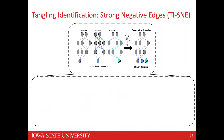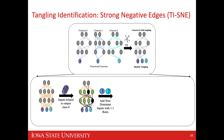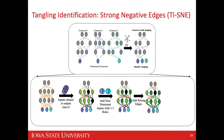Another approach is strong negative edges. Similar to the previous examples, the only difference is that we don't add all edges — we add only strong edges, meaning edges that contribute significantly towards the classification of the non-dominant concern. Specifically, we define 'significant' as achieving at least 50% classification accuracy on the non-dominant class.